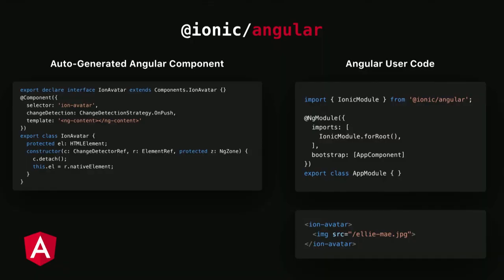We quickly realized this with Ionic Angular — we need to provide our Angular users with Angular components, not web components. Angular developers expect Ionic to work no differently than any other Angular library. On the left is an example of an auto-generated NgModule, which is what's used internally for Ionic Angular. On the right is how an Angular developer would import Ionic and use it in its template. It doesn't matter that the components are actually web components — to Angular developers, they're using Ionic no different than the rest of the libraries. This includes inputs, form controls, host listeners, and all the other Angular APIs.